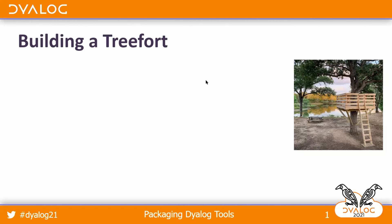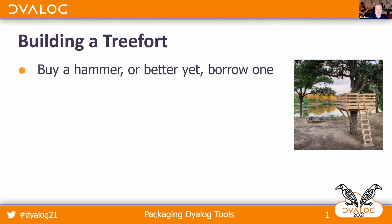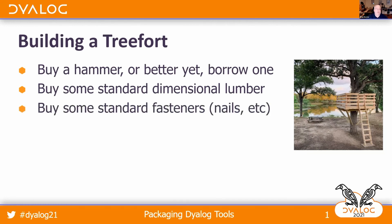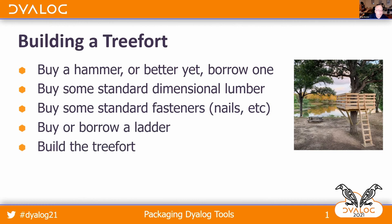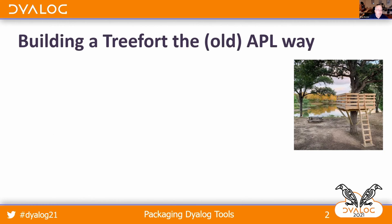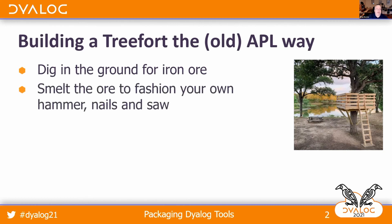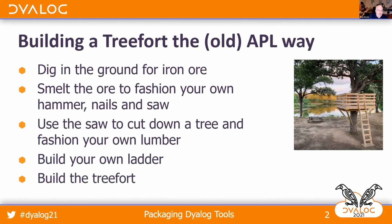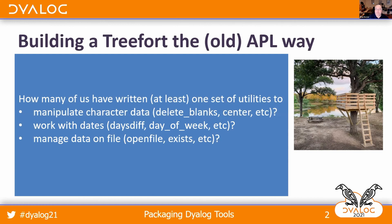So, building a tree fort. You're going to buy or borrow a hammer, buy some dimensional lumber, buy some standard fasteners like nails and bolts, buy or borrow a ladder, and then you'll build your tree fort. Now I want to talk about building a tree fort the old APL way. The first thing you're going to do is start digging in the ground for some iron ore, smelt that iron ore to fashion your own hammer, nails, and saw, then use the saw to cut down a tree and fashion your own lumber — and it won't be standard size.